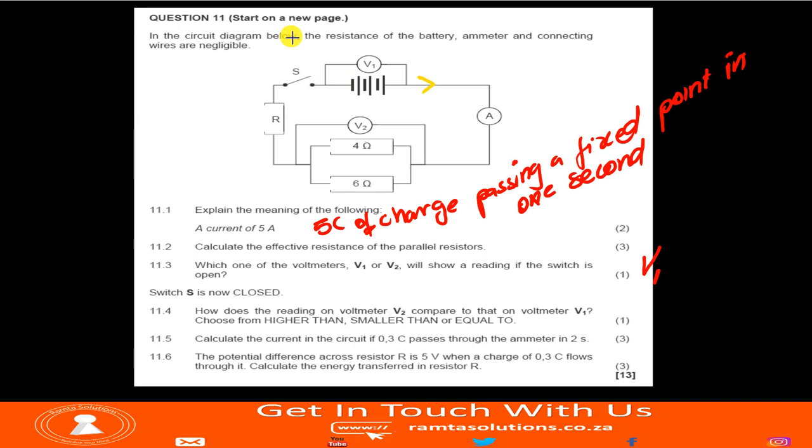Switch S is now closed. How does the reading on volt meter V2 compare to that on V1? Choose from higher than, smaller than, or equal to. Now, if this switch is closed, there will be current flowing. Remember, this V2 will be in series with the voltage of resistor R. And what you know, when they are in series, potential difference is divided. So obviously, when it's divided, the sum of this voltage and the voltage of this guy must be equal to this. So that means the voltage of V2, when switch S is closed will be smaller than.